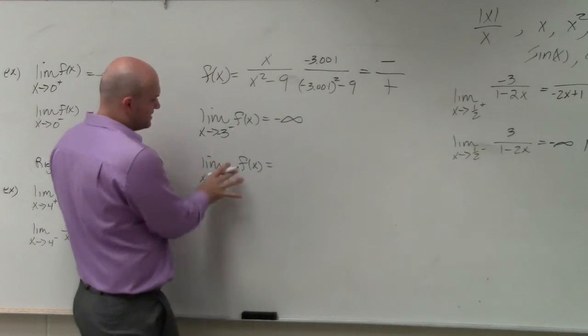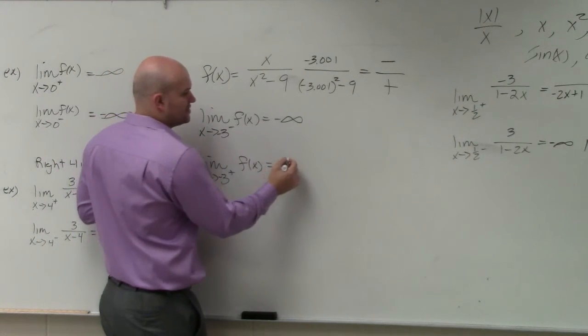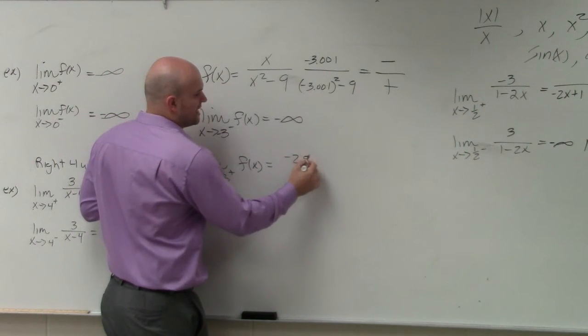If you look at from the positive side, let's choose a value that's just to the right of negative 3. So negative 2.999.